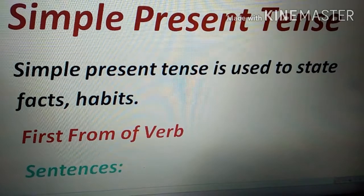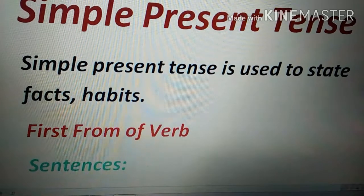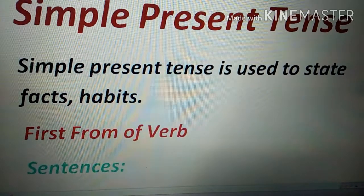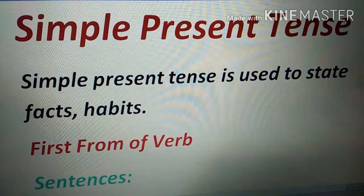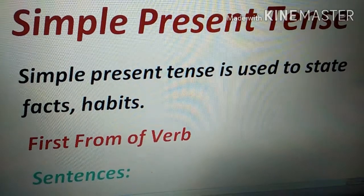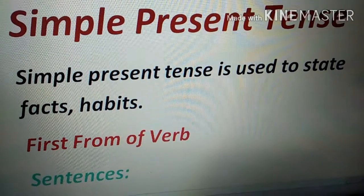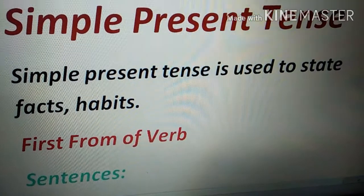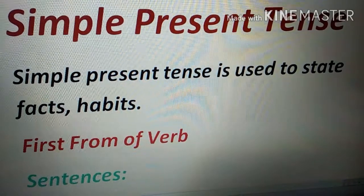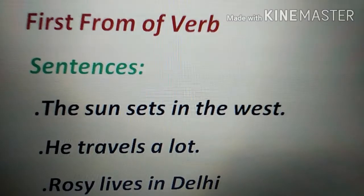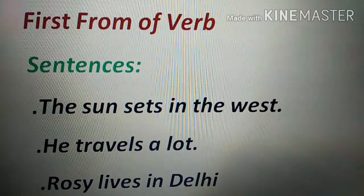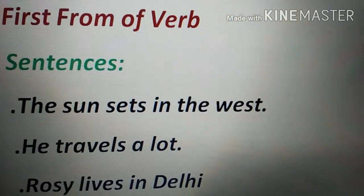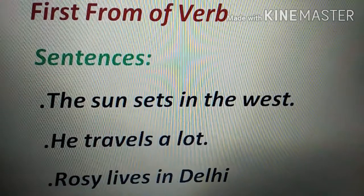Simple present tense is always used when you're stating facts, habits, or your routine work. For example, if I ask you what time do you wake up, you'll say 'I wake up at 7 a.m.' — that's your habit. Now many students get confused about which form of the verb to use. The simple answer: just remember the formula — the first form of the verb, also called the basic form or root form.